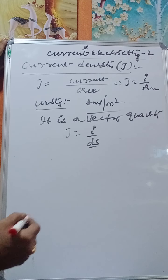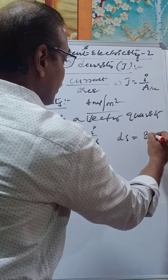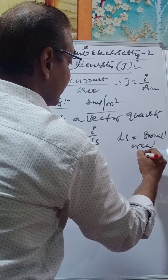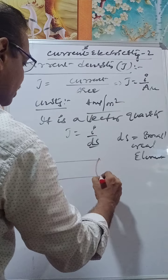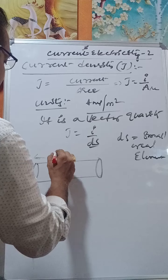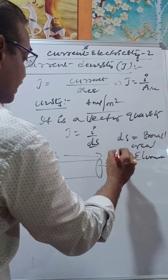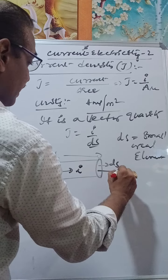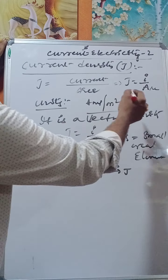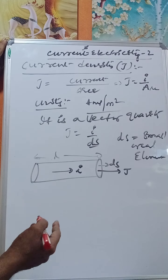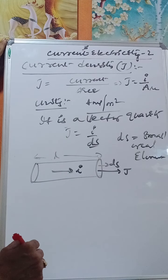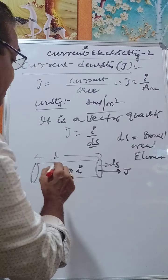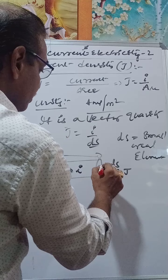Sometimes we take a small area element ds. If we consider current passing through the cross-section of a cylinder of length L and area ds, then current density J-bar is a vector quantity. The direction of current density J-bar is in the direction of current.